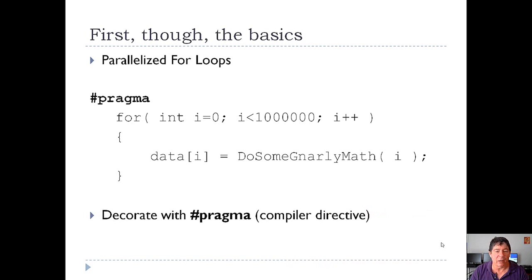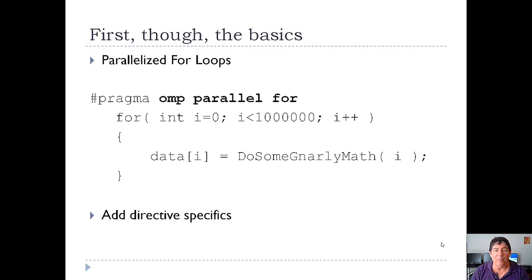The next thing you have to do is decorate with a pragma. A pragma is a compiler directive — it tells the compiler that you are going to do something special, something that's not really part of the C++ or C language. We give the compiler the specifics, and in this case we say use OpenMP and we want a parallel for. Once we do that, the compiler will generate the parallelization code behind the scenes for us.